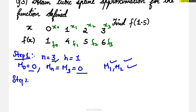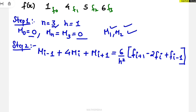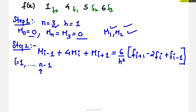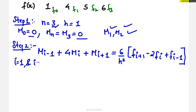For step 2, we apply the cubic spline formula. Here i comes into the picture. We substitute i starting from 1 up to n minus 1. Since n is 3, we go from i equals 1 to i equals 2. Substituting these values will give us M1 and M2.